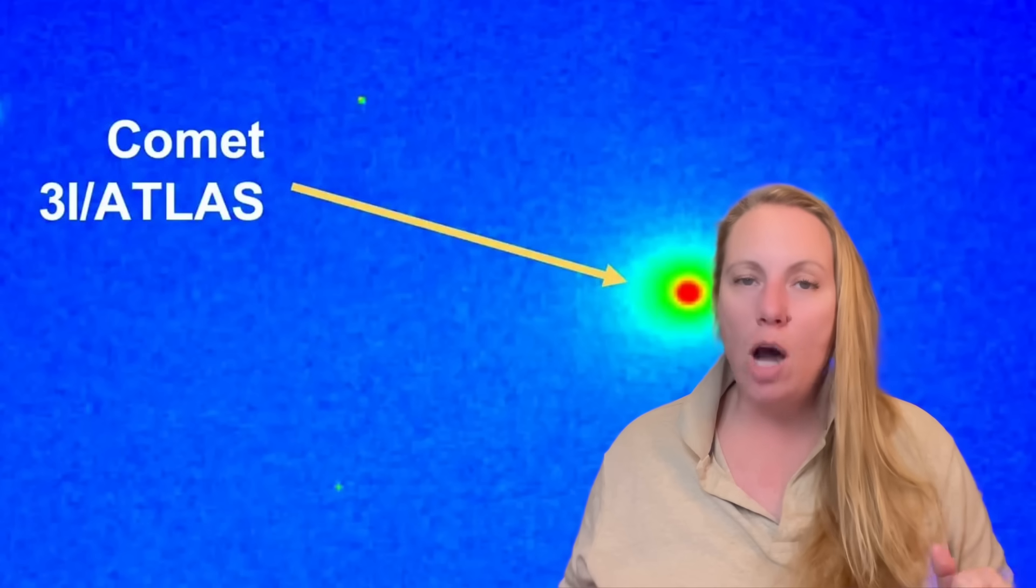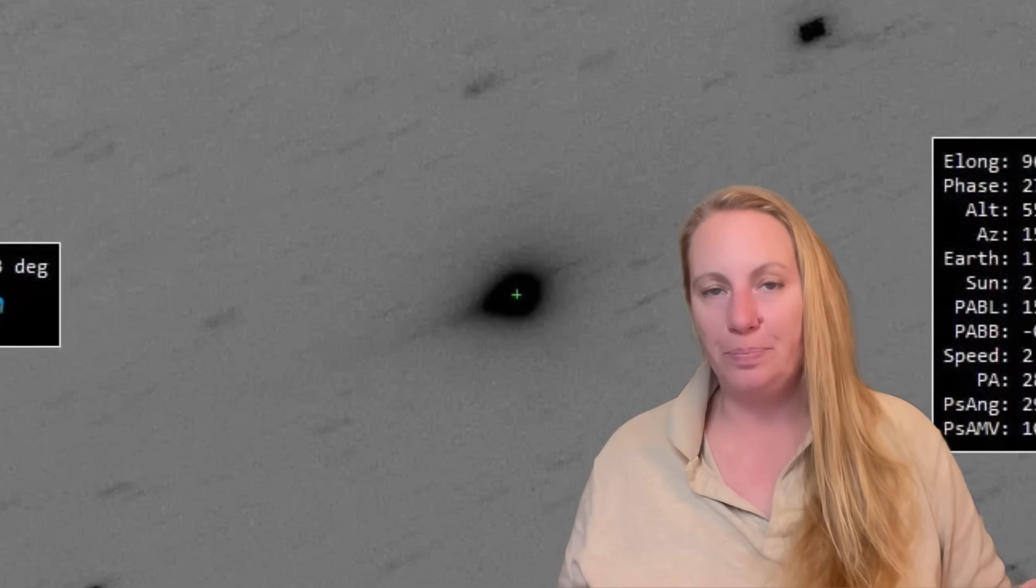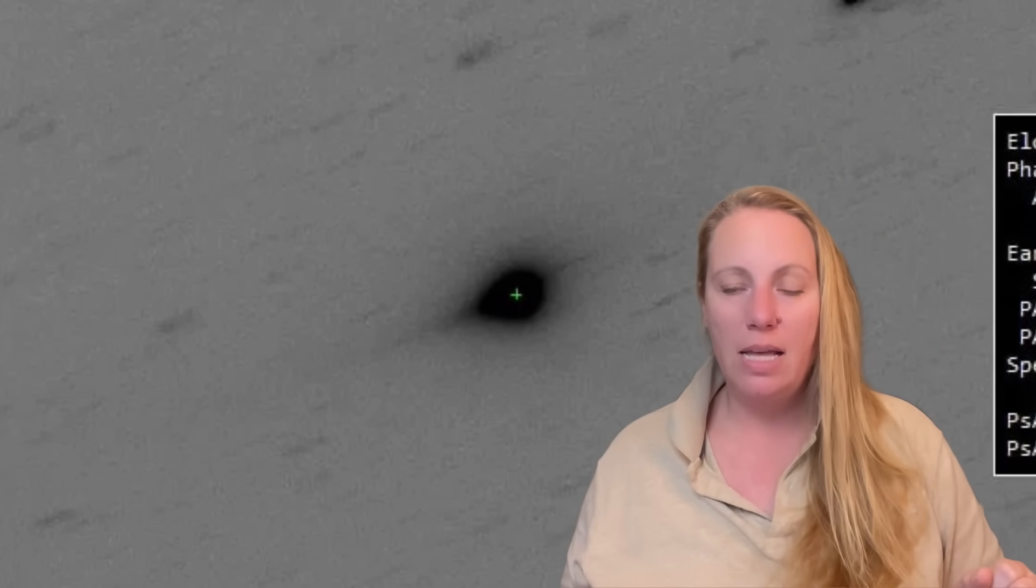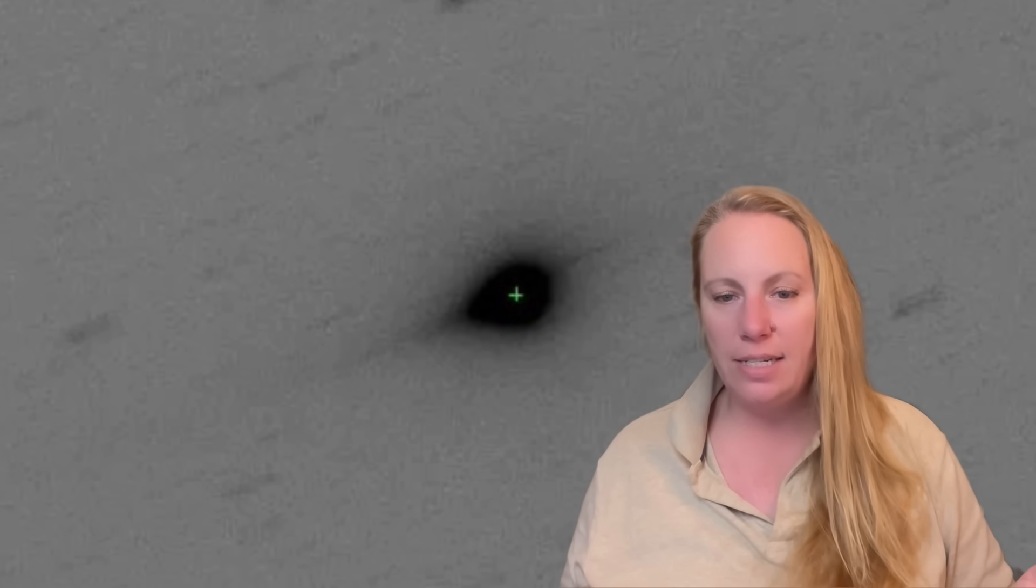We've talked about this, why there are so many anomalies or qualities of 3i Atlas that would explain that this could really be something like that. And also, if we look at this black and white picture that we have from December 14th, you clearly see the tail and the anti-tail.